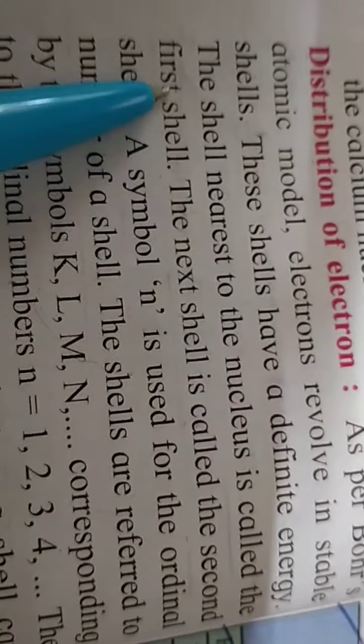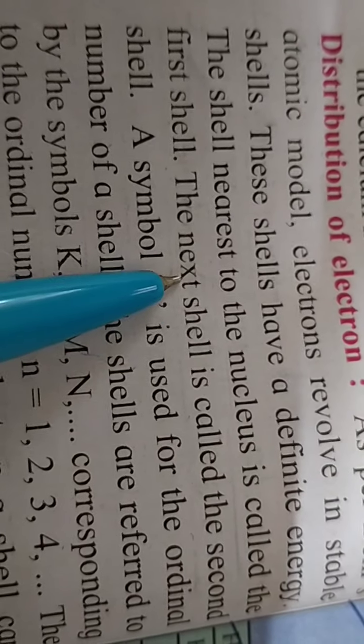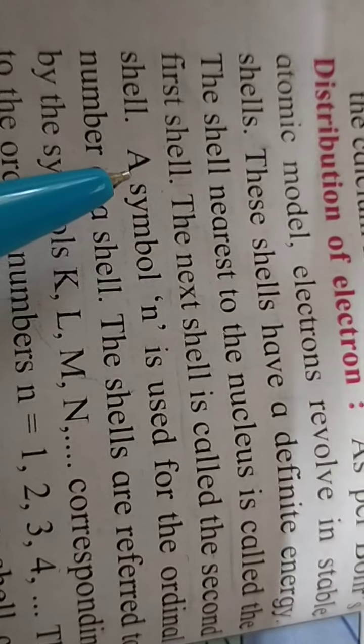Each shell has its energy. The shell nearest to the nucleus is called the first shell. The one closest to the nucleus is the first shell. The next shell is called the second shell. After the first shell comes the second shell, then third, then fourth. This is how we number the shells.